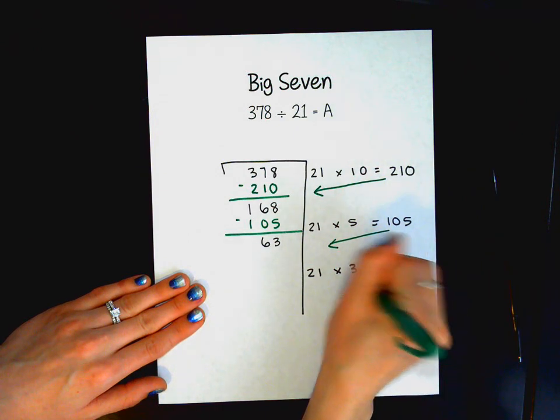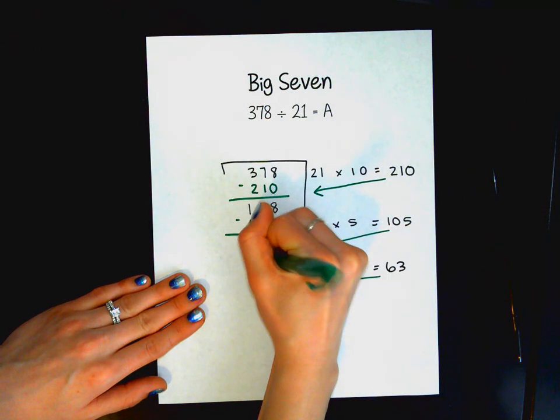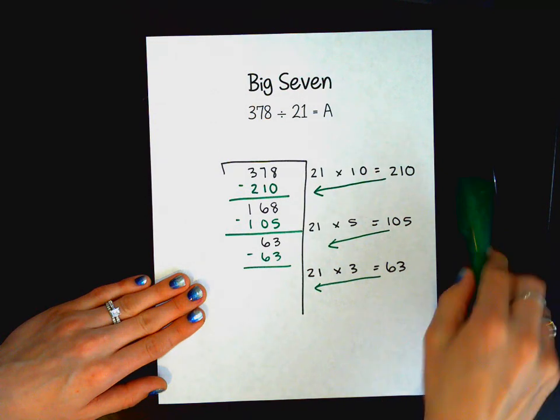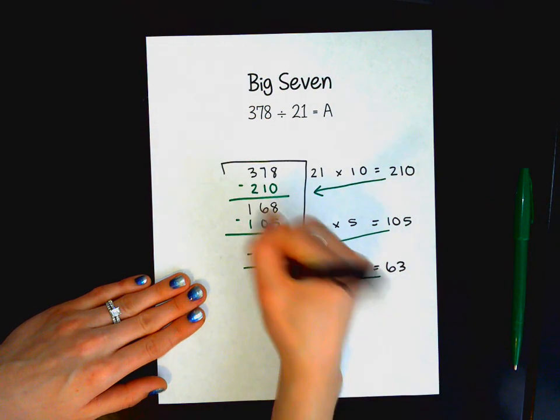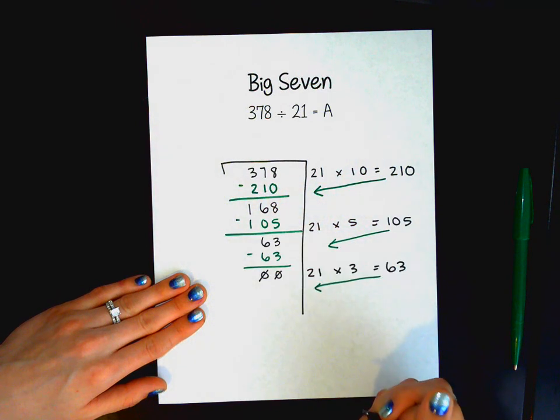Again, I like to draw an arrow, keep myself organized. Okay, 3 minus 3 is 0, 6 minus 6 is also 0.